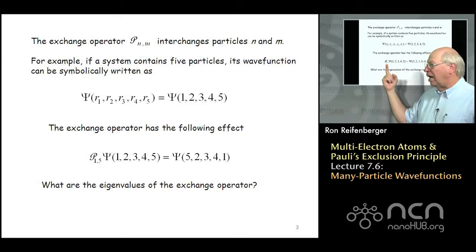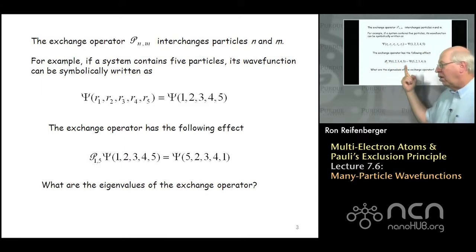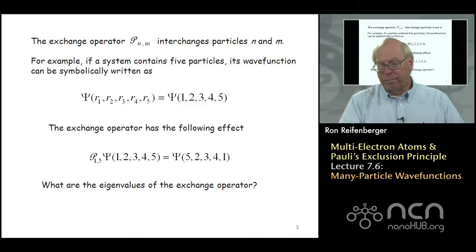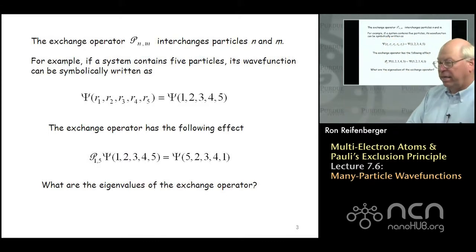If I then operate on this many-particle wave function by this exchange operator, let's say P sub one five, all it does is it takes the particle at position one and moves it to position five, and it takes the particle at position five and moves it to position one. So the operation of this exchange operator on this wave function produces a wave function that looks like this. It's a very simple idea and it just allows us to formally get at the fundamental symmetry that has to underlie this particular wave function.